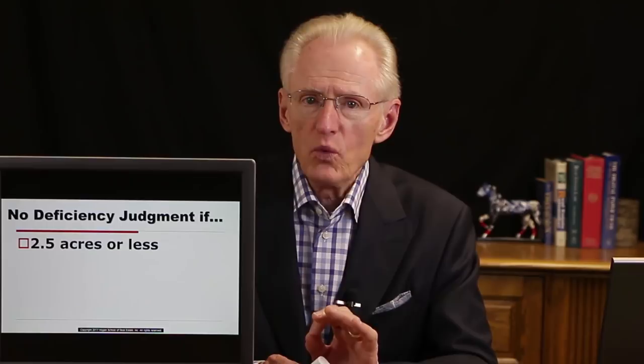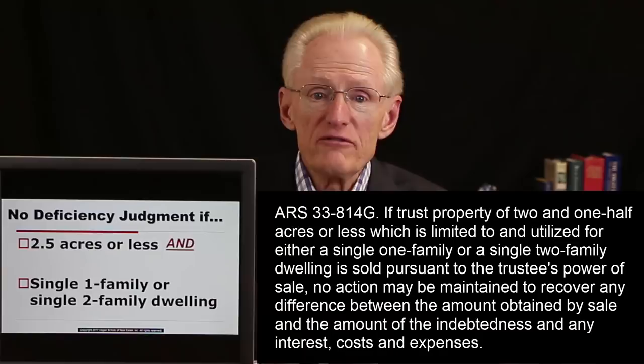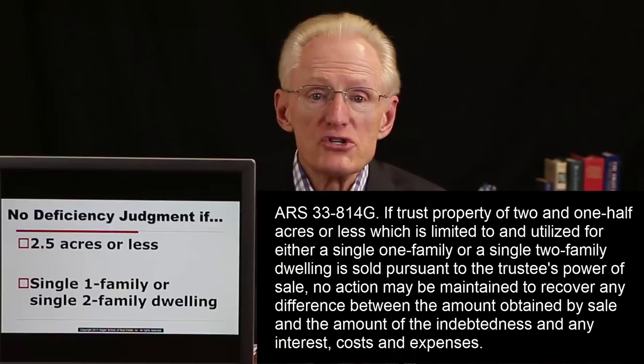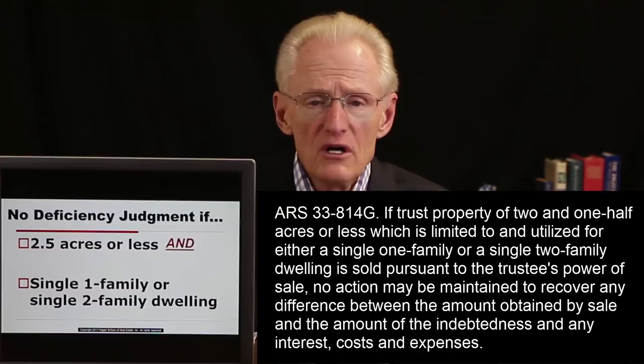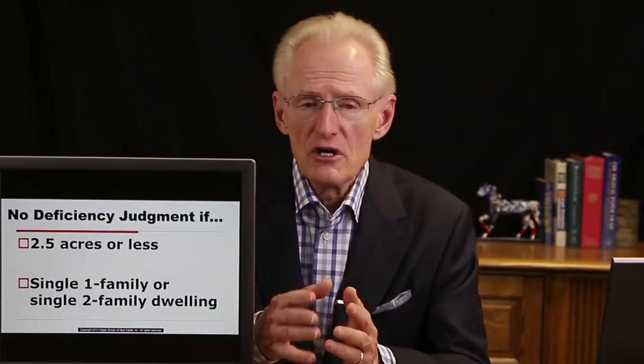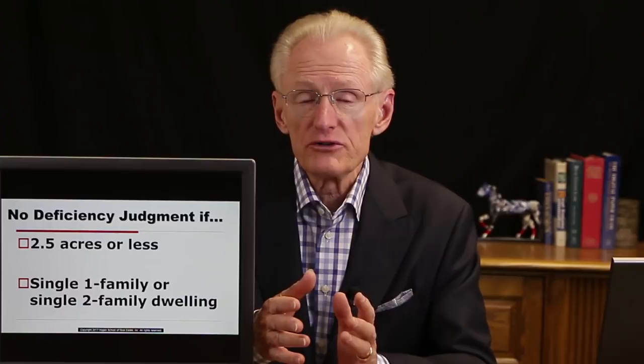Here in Arizona, this is very specific to Arizona law: there cannot be a deficiency judgment if the property is 2½ acres or less in size and used as a single one-family or single two-family dwelling. Both conditions must be met. This includes most homes in Arizona — single-family detached or a duplex on 2½ acres or less.